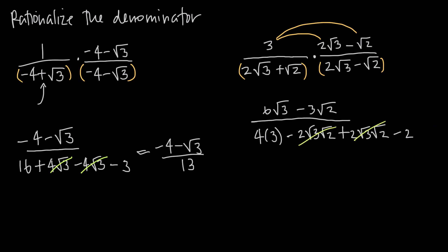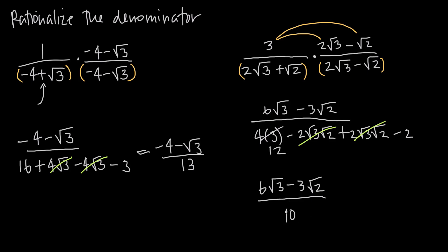The sum of those is 0, and we're just left with 4 times 3, which is 12, minus 2. So when we simplify, we're going to get 6 root 3 minus 3 root 2 in our numerator, and in the denominator 12 minus 2, which is 10. Just like before, we removed all of the square roots from the denominator — we're only left with a whole number. So that's how we use the conjugate method to rationalize the denominator.